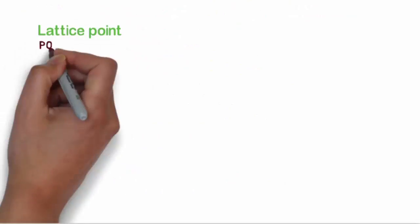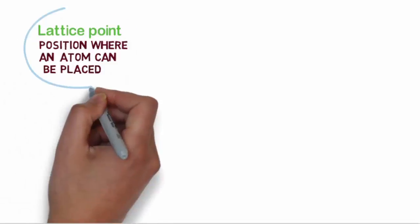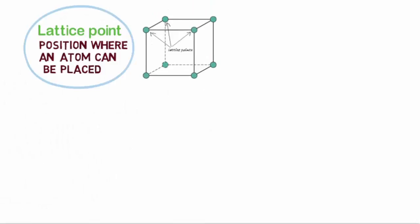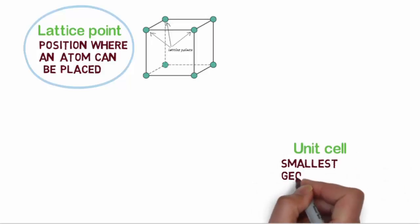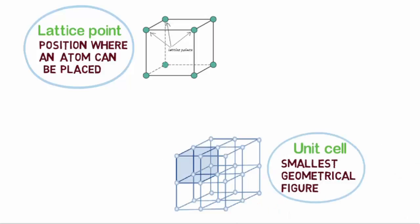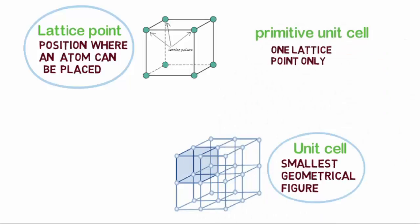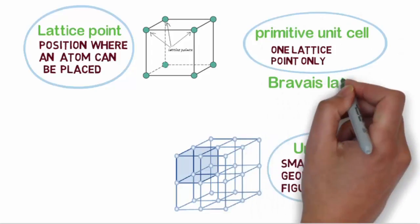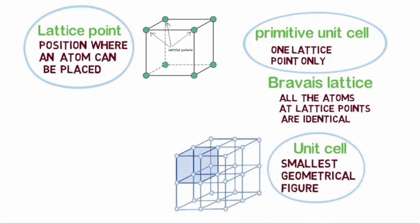Lattice points are the positions or coordinates where we can place an atom, so we can find either an atom or vacancies at the lattice points. Unit cell is the smallest part of a crystal. The whole crystal structure can be formed by the repetition of these unit cells. A primitive unit cell is the cell that contains one lattice point only. If all the atoms at different lattice points are identical, then the unit cell is called a Bravais lattice.